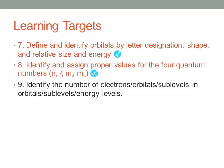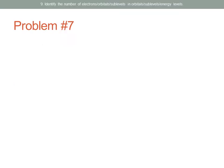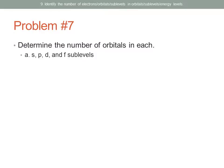We have hit the second learning target. The last one: we want to be able to identify the number of electrons, orbitals, and sublevels in orbitals, sublevels, and energy levels. Problem seven asks us to determine the number of orbitals in each. S sublevels contain one orbital, P sublevels contain three orbitals, D sublevels contain five orbitals, and F sublevels contain seven orbitals.